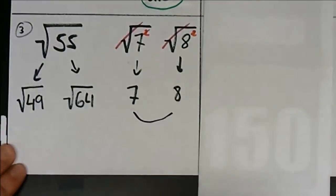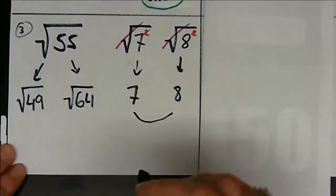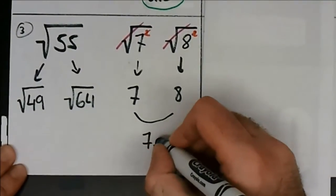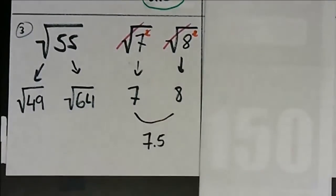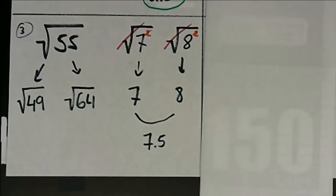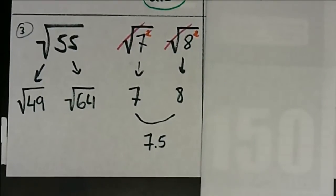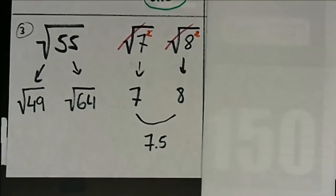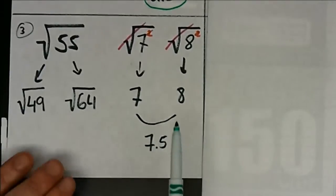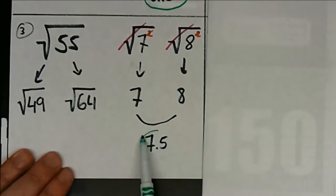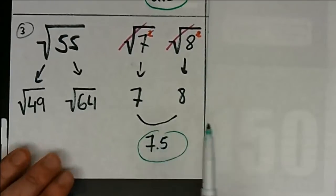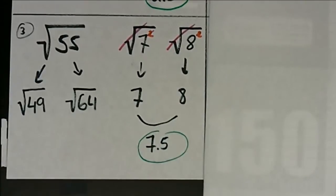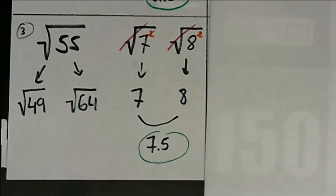So the answer is going to be in between 7 and 8 as well — about 7.5. I'd say it's probably a little closer to the 49 side, but it's good enough for our purposes. Questions on 3?